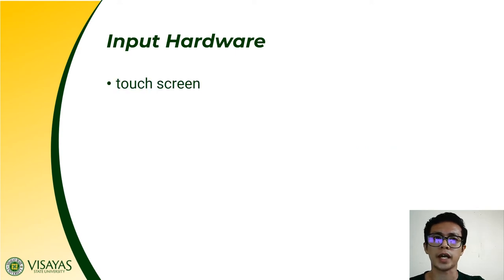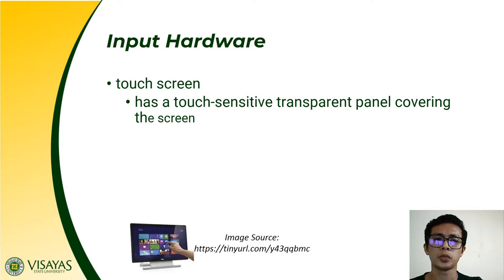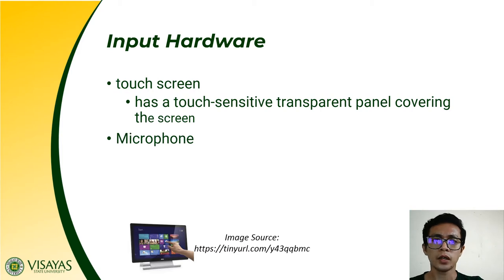Another input device is what we call a touch screen. Nowadays, our computer screens are becoming more interactive, allowing you to point and select objects right from your computer screen. A touch screen is a display which has a touch-sensitive transparent panel covering the screen, allowing you to point and select objects directly. Most laptops today also have a built-in touchpad, which is a small sensitive pad. Touch screens are commonly used in touch-enabled devices like smartphones.